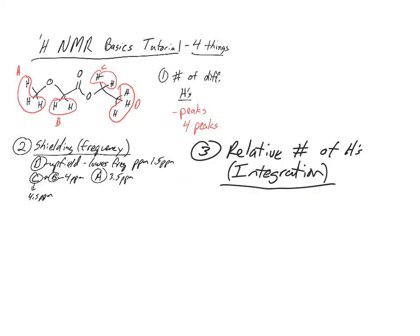The third thing NMR will tell us — proton NMR — is the relative number of hydrogens. This is found by the integration of the area underneath the peak. Let's draw a spectrum. We know we have four peaks. Number two told us maybe where these peaks are — some might be farther downfield, some farther upfield. Number three is going to tell us how big these peaks should be based on the relative number of hydrogens in the molecule.